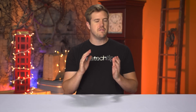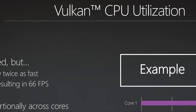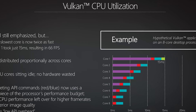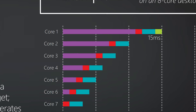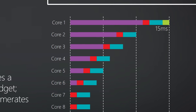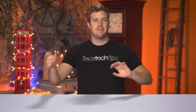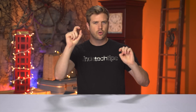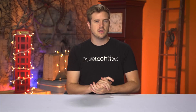Now let's look at Vulkan, though this is generally applicable to both new generation APIs. One of your processing cores is still responsible for a bigger part of the work than any of the others, but overall utilization is noticeably higher, even all the way down to Core 8. This is a hypothetical example, but in a nutshell, Vulkan and DirectX 12 do a much better job overall of sharing the load across all cores.